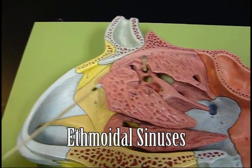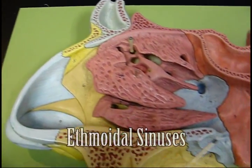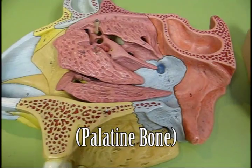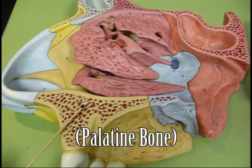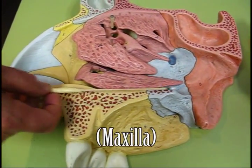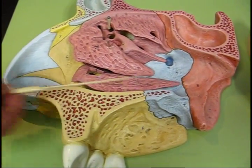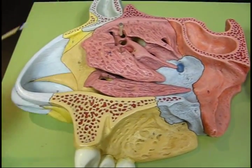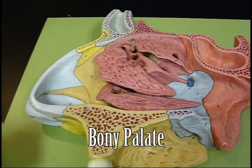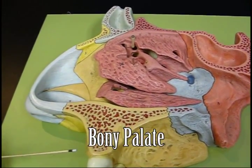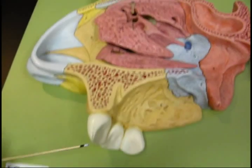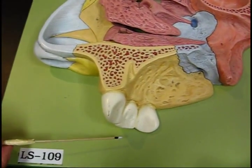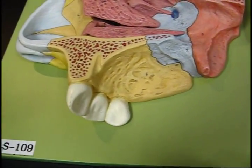Ethmoidal sinuses. We have the palatine bone and the maxilla forming the bony palate. We have the incisor and a canine.